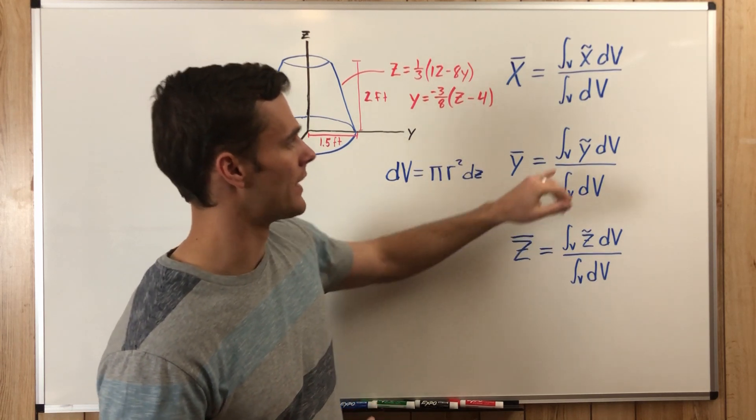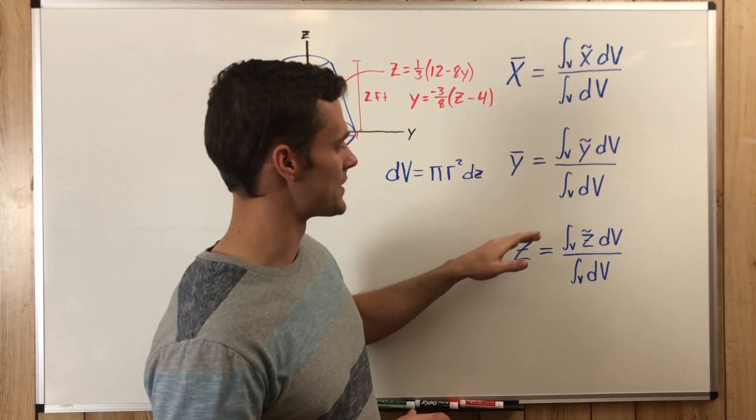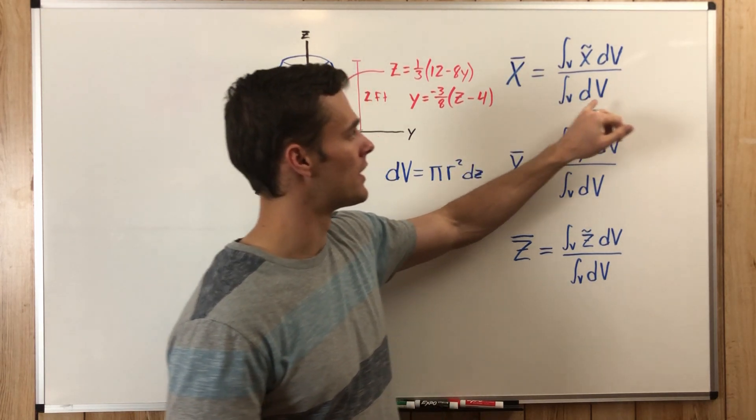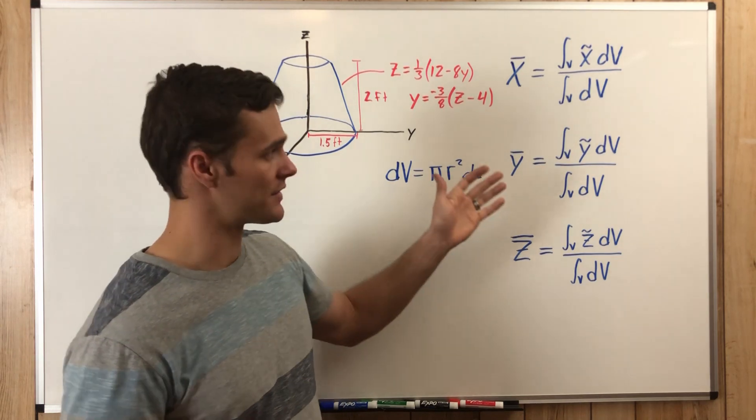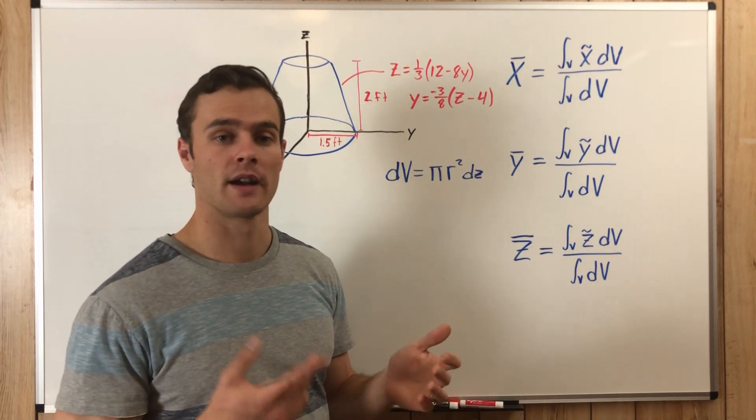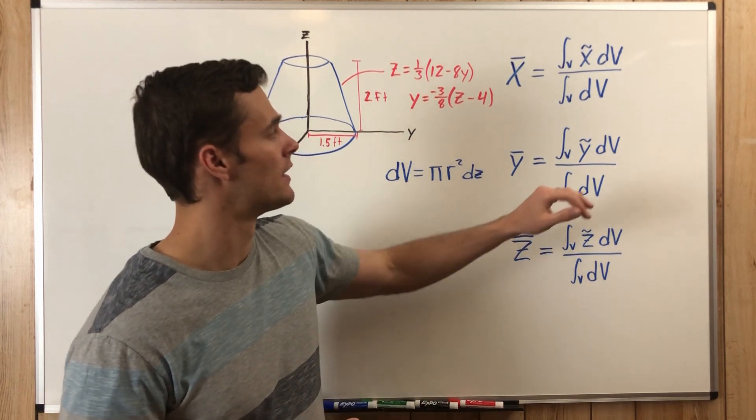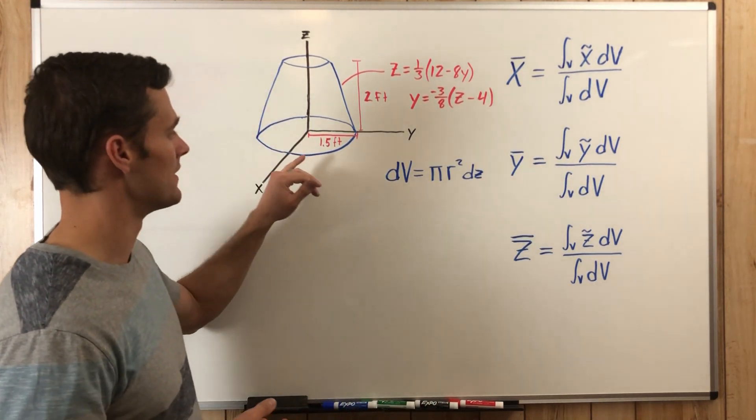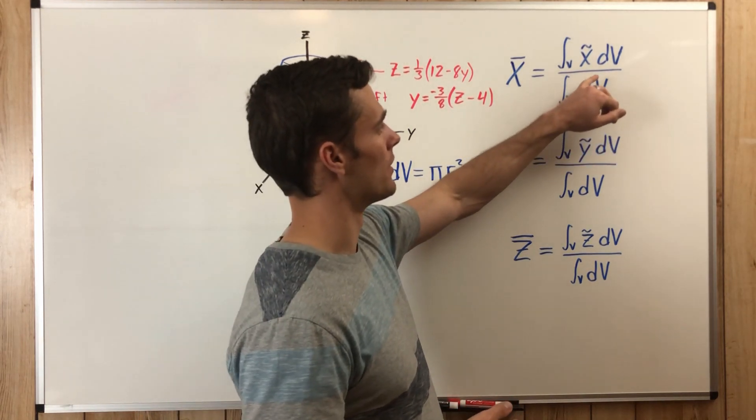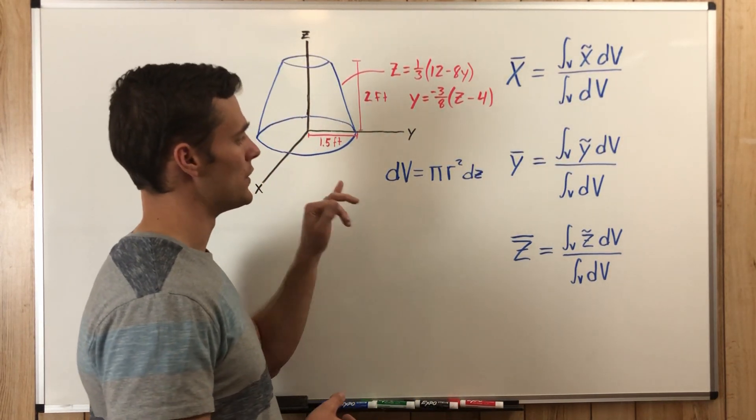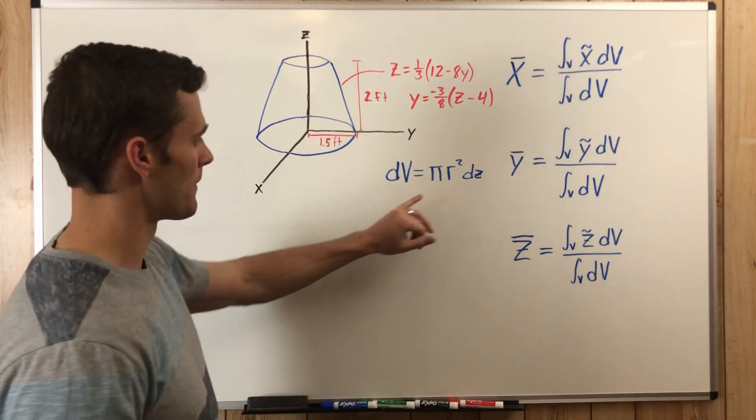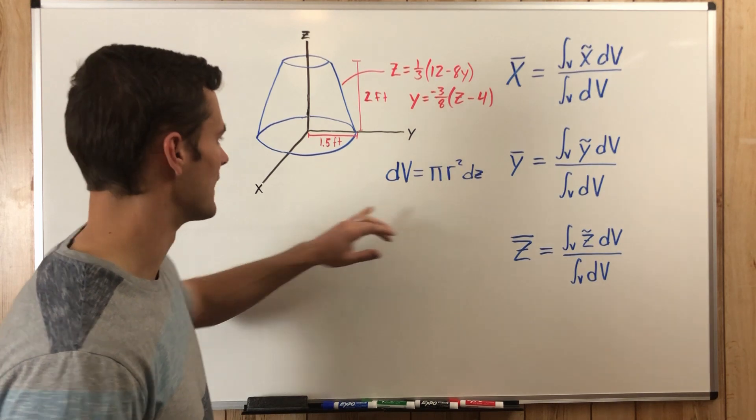But other than that, they're all the same. So we integrate along the volume with respect to a certain variable, either X, Y, or Z, just depending on the shape you are going to be integrating and what's going to be easiest. In this case it will be the Z variable, and so our dV as I've written out here using the disk method is going to be πr²dz.